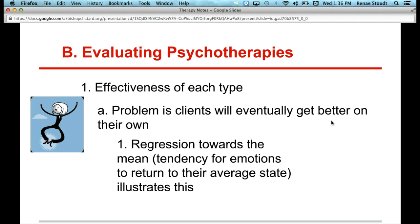They eventually will regress to whatever their average state originally was. This applies to emotions, but also to a lot of other things. For example, if you've ever had a class where overall you got C's on quizzes and tests, and then you had one quiz where you got an A — maybe I'm getting it, maybe I studied differently — and then you took the next quiz and went back to a C. That's the idea of regression towards the mean: you always have this tendency to return to the average state.